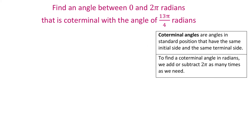In this video, we will see how to find an angle between 0 and 2 pi radians that is coterminal with a given angle. Coterminal angles are angles in standard position that have the same initial side and the same terminal side. To find a coterminal angle in radians, we add or subtract 2 pi as many times as we need. In the first example, we will find an angle between 0 and 2 pi radians that is coterminal with the angle of 13 pi over 4 radians.